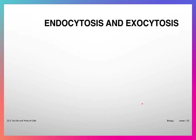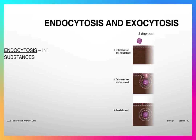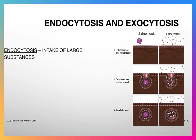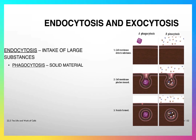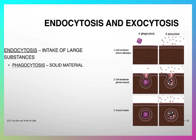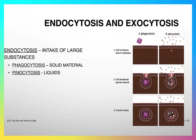Two other processes we need to talk about are endocytosis and exocytosis. Endocytosis is the intake of large substances into the cell. If the substance is solid, this is called phagocytosis, pictured here on the left. And if the substance is liquid, then it is called pinocytosis, pictured here on the right.